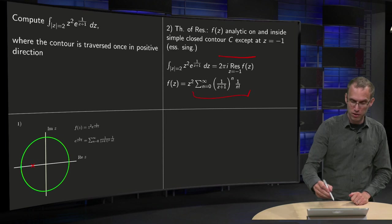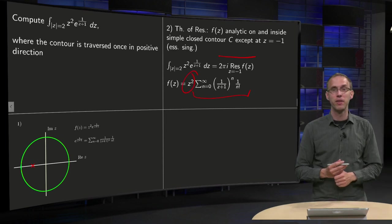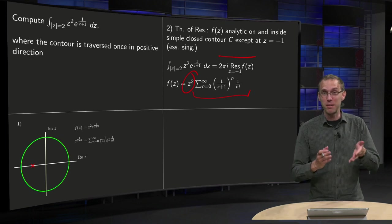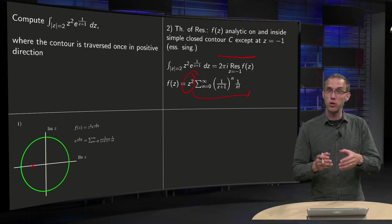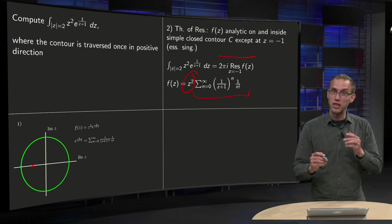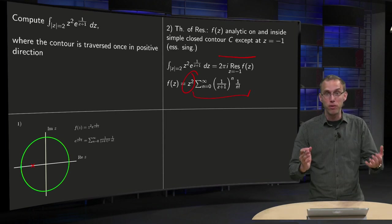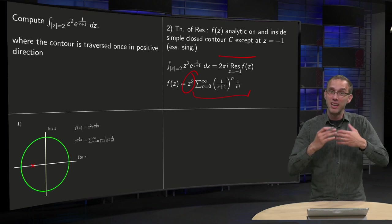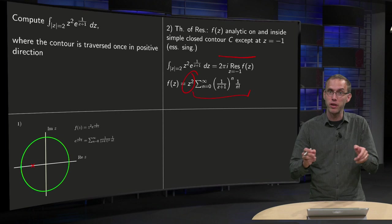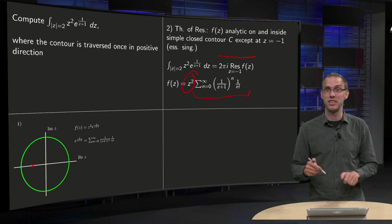Here we need to be really careful. The z squared looks so innocent, but it isn't, because you are now expanding around z equals minus 1. So you want powers of z plus 1 in your Laurent series, and the z squared is not yet a power of z plus 1. So you have to rewrite the z squared in terms of powers of z plus 1.